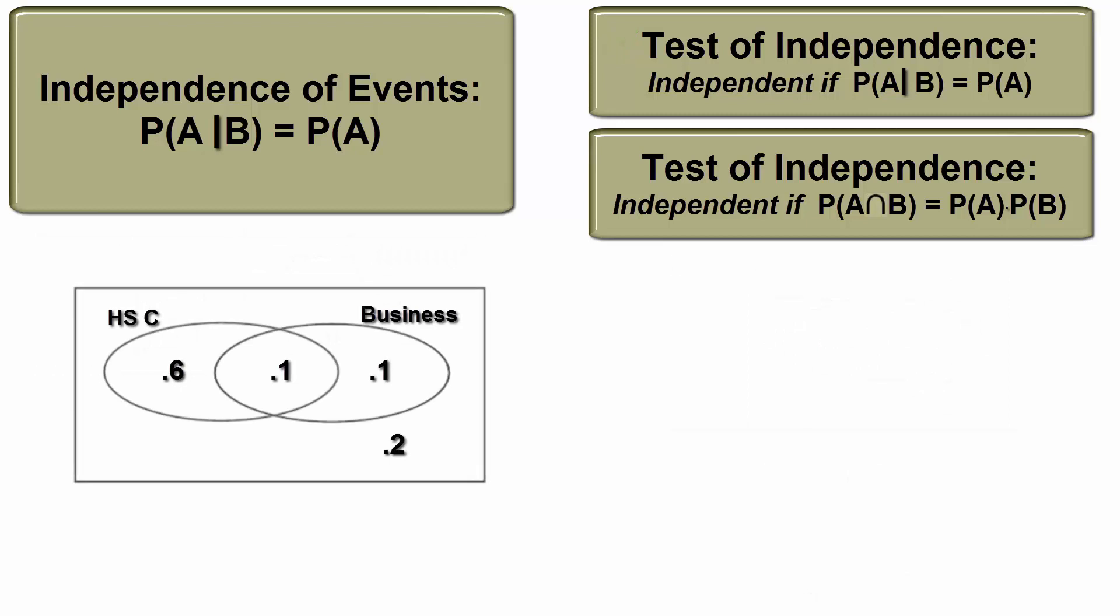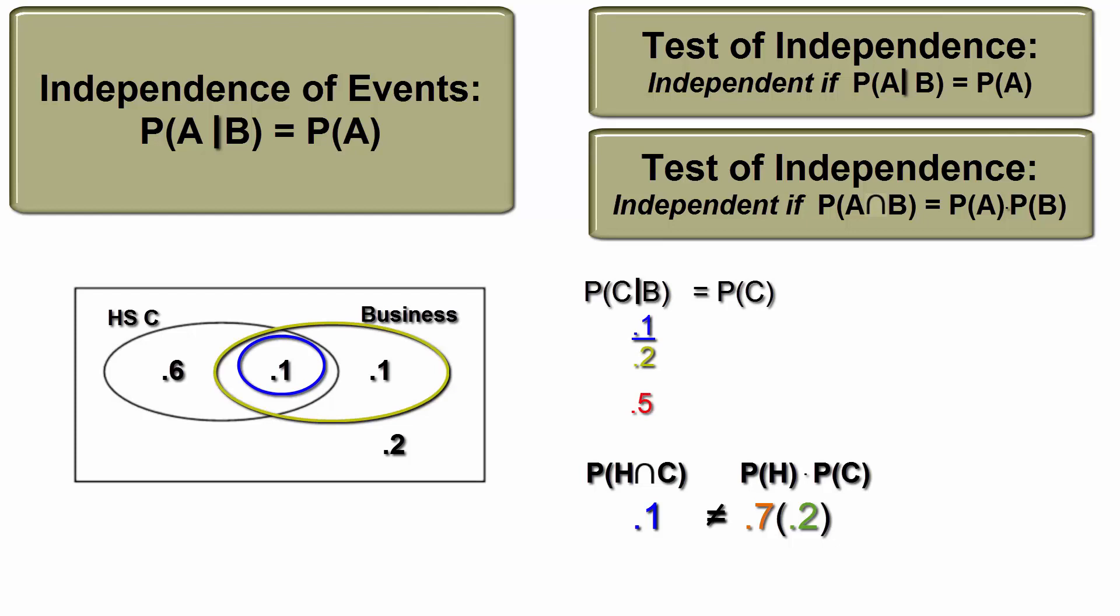Does this Venn diagram of high schools C and D display independence? The answer is no. Both tests confirm that the two events are dependent. 0.7 times 0.2 is not what's in the intersection and the probability of being in high school C given the student declared a business major is 0.5 and not 0.7. These are dependent events.